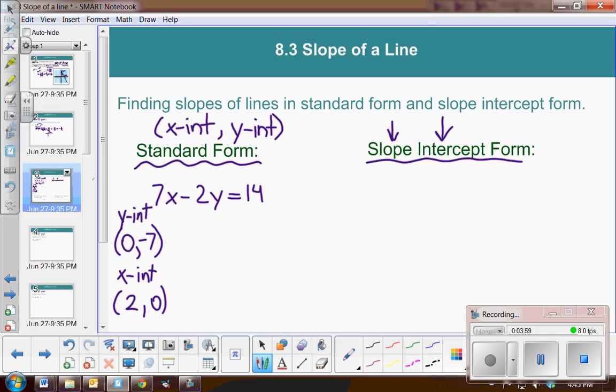Slope-intercept form? So for slope-intercept form, let's say I have a function y equals 5x plus 2. So we know that slope-intercept form is mx plus b, where m represents the slope, and b represents the value of the y-coordinate of the y-intercept.